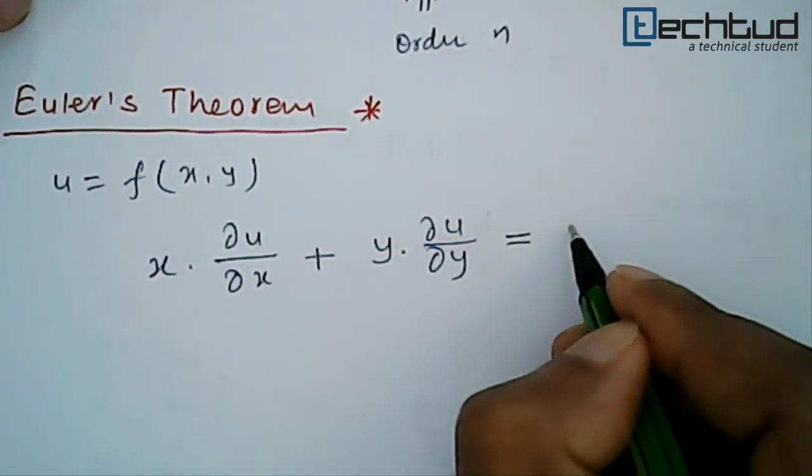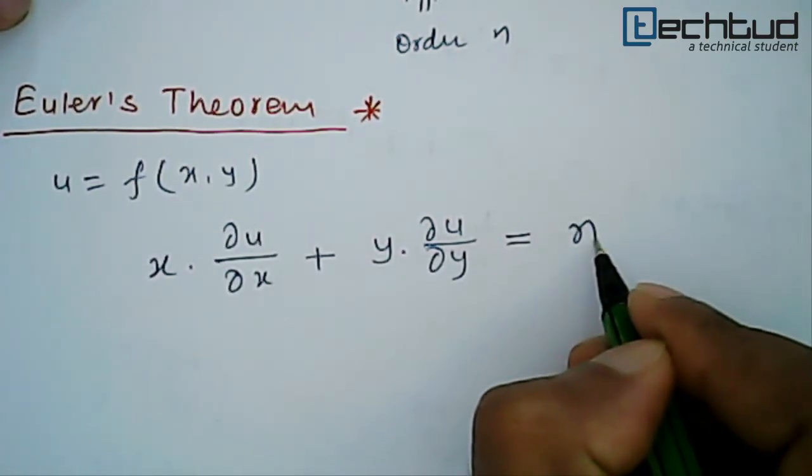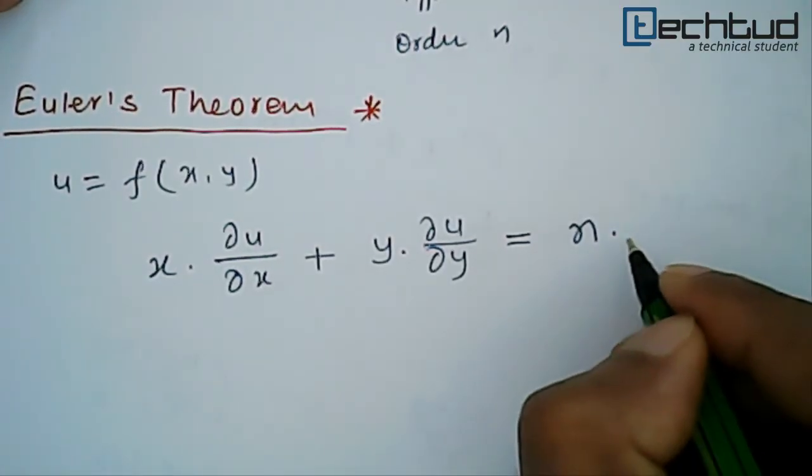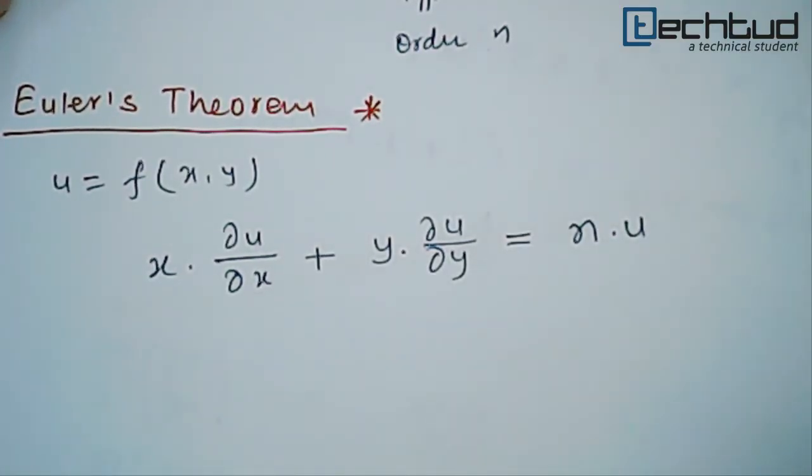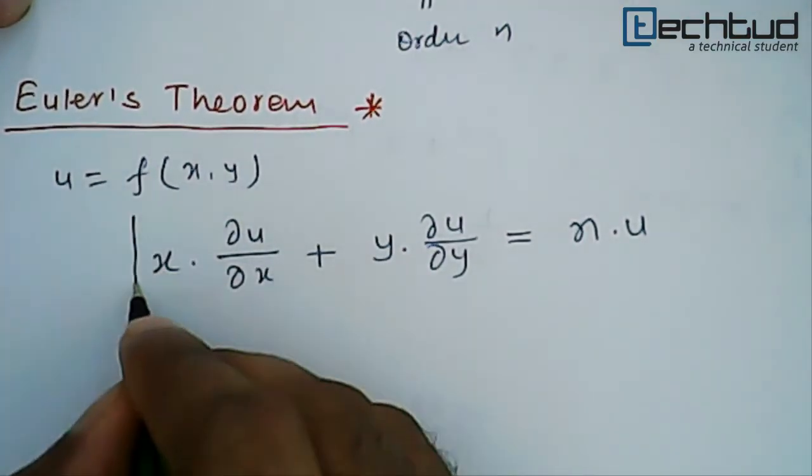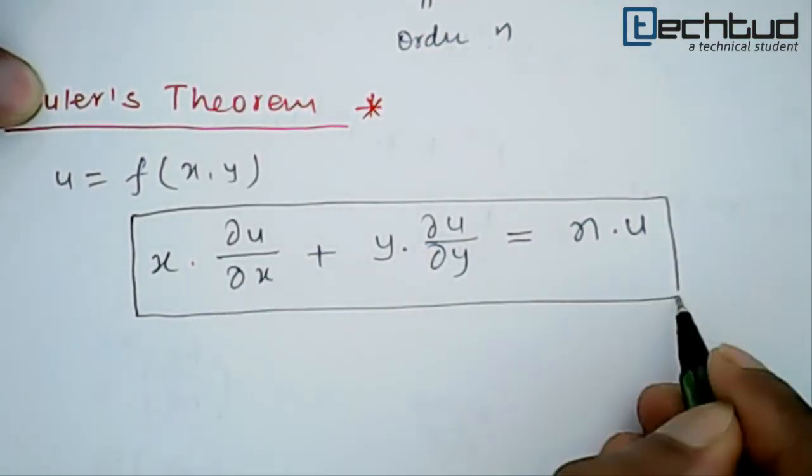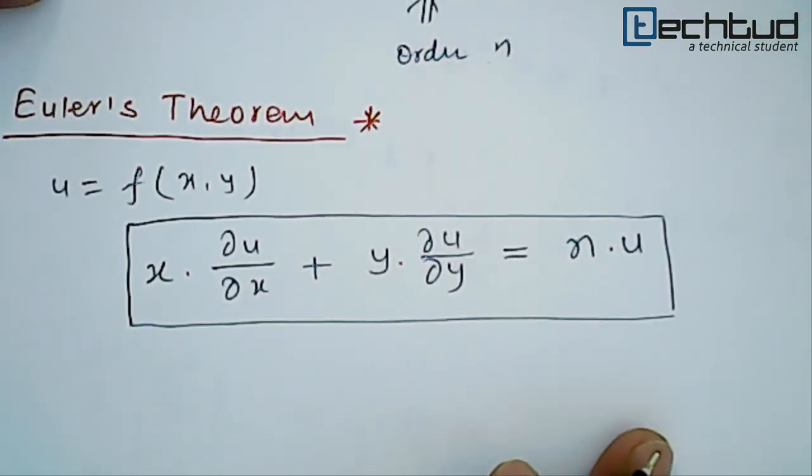So if we do this, this will be equal to the order n - the degree of this homogeneous function - times the function itself, which is u. So this is what Euler's theorem says, and we have applications of it. It's very easy to remember.